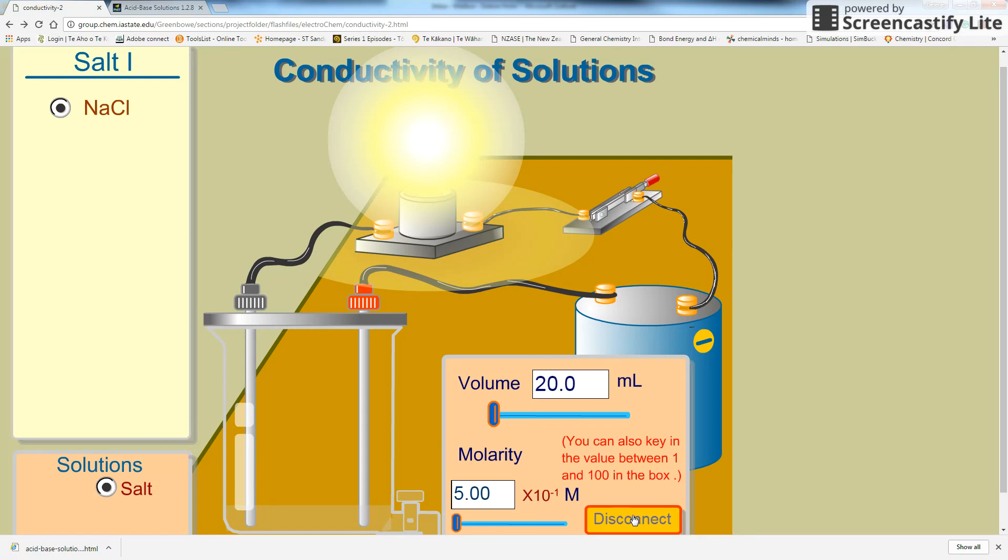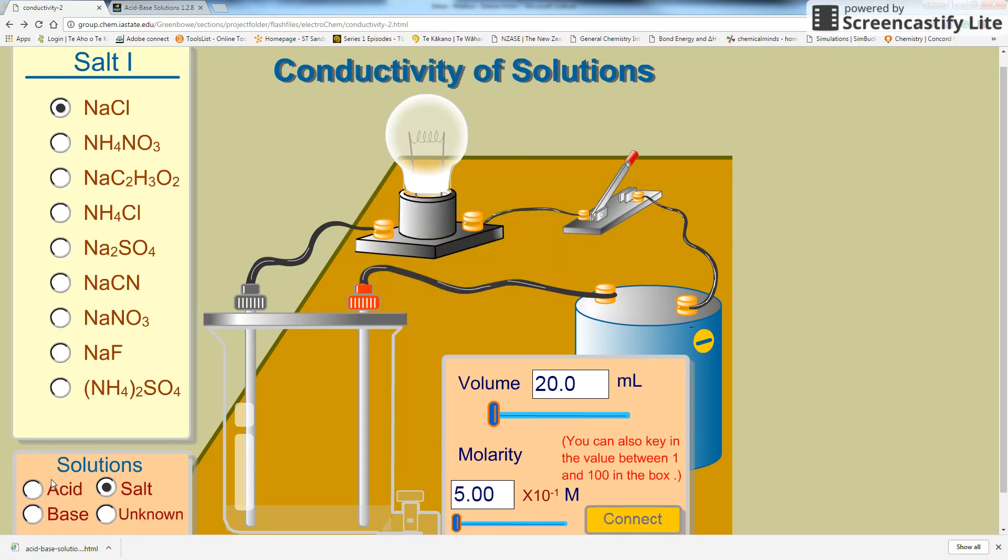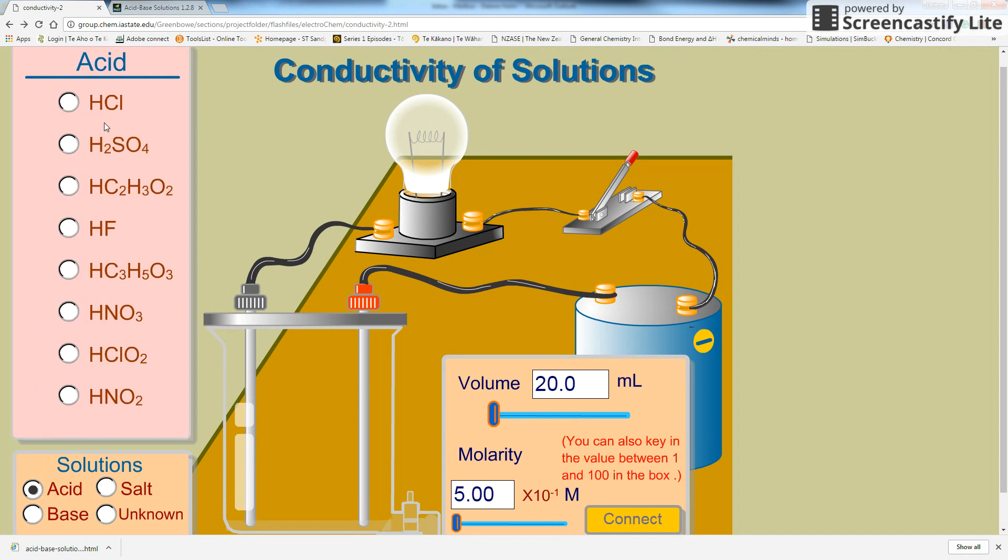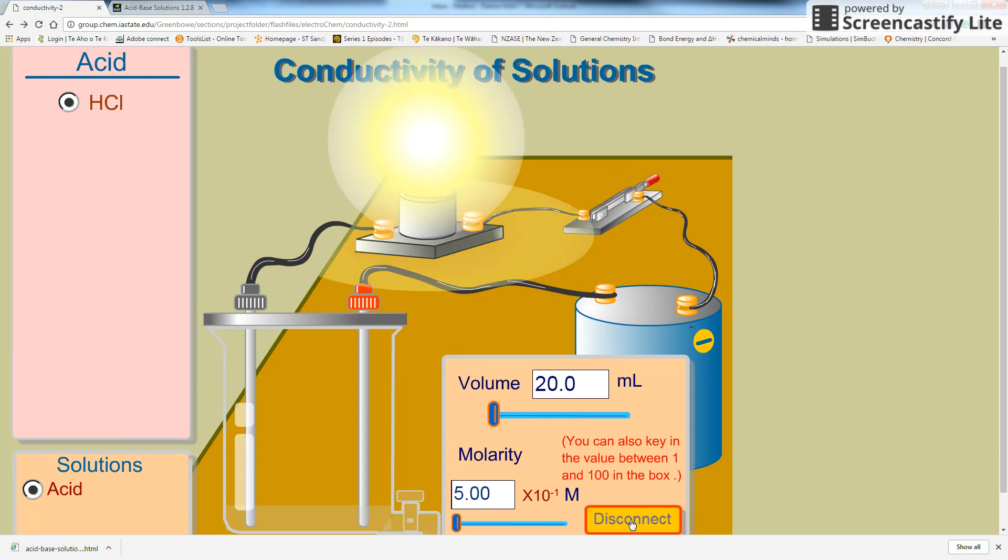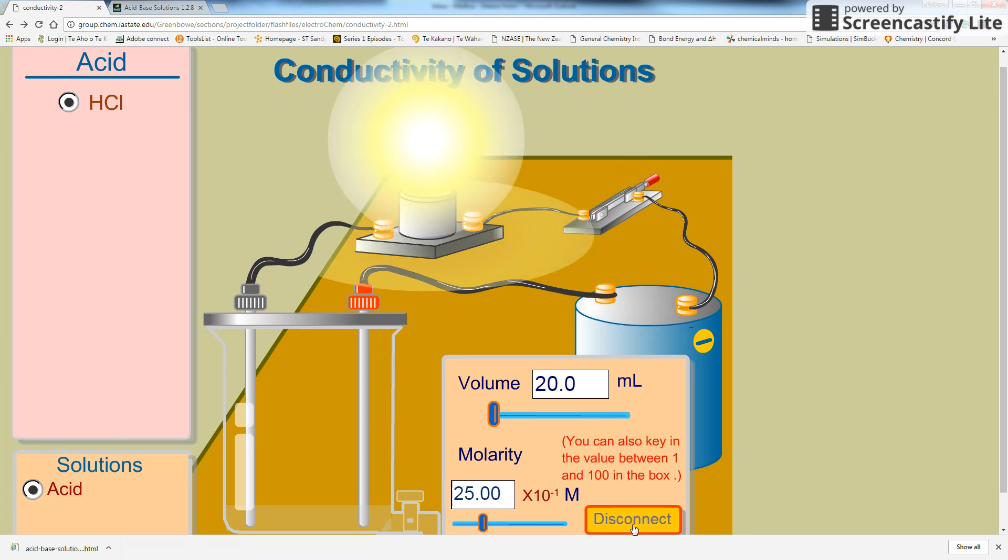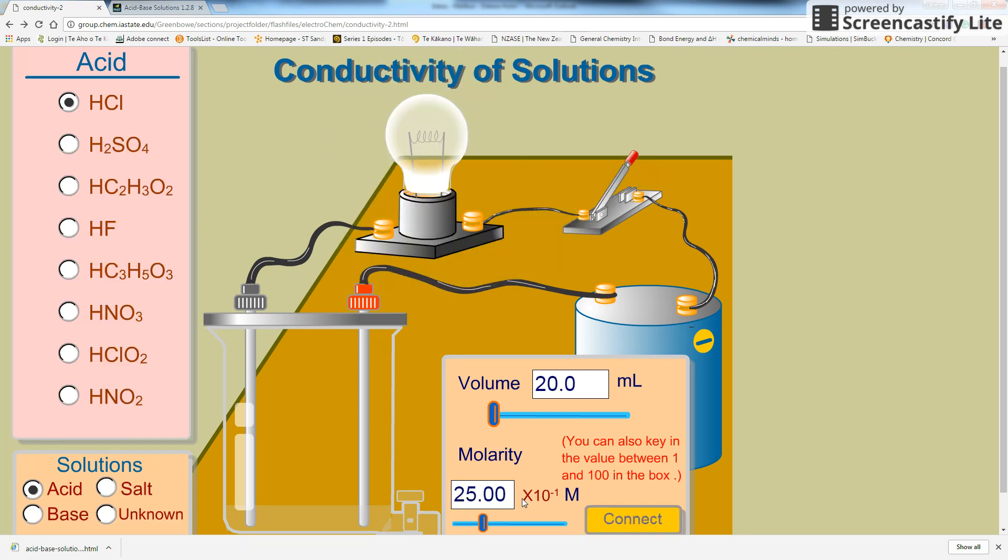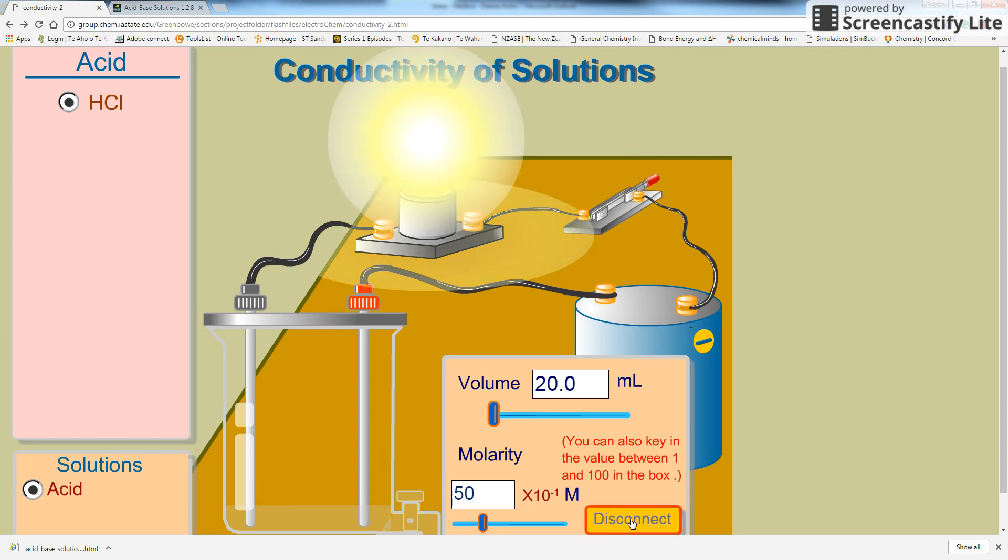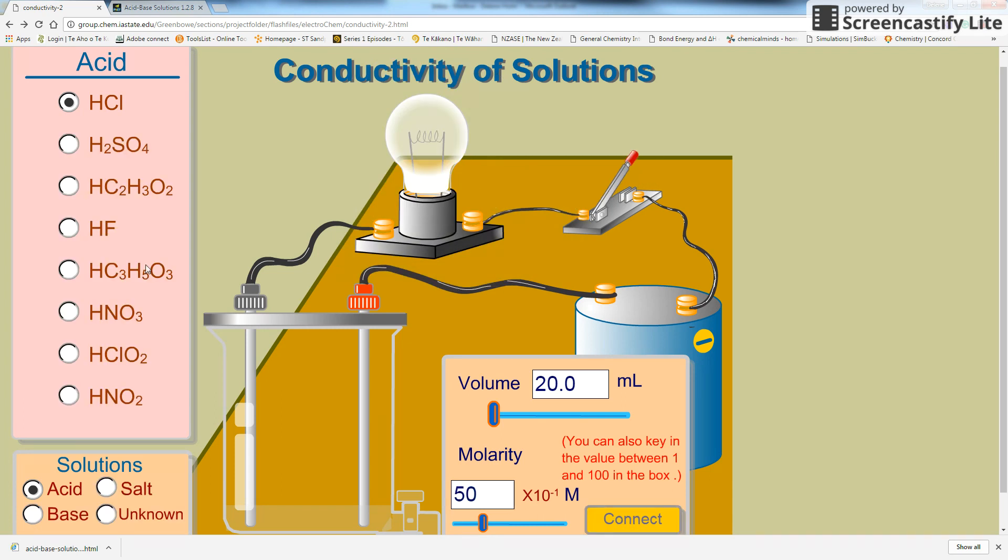Now you can also explore this by changing the concentration. So if I have HCl and I connect it, and then I change the concentration, so let me move it up to 25, and you can see it glows more brightly. I could make it to 50, and so on. I could try the same thing with a weak acid.